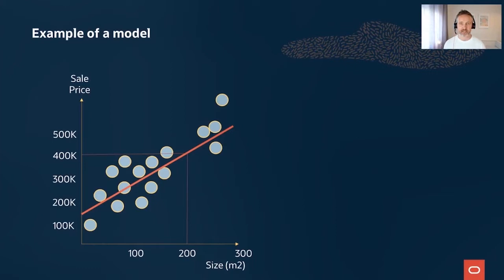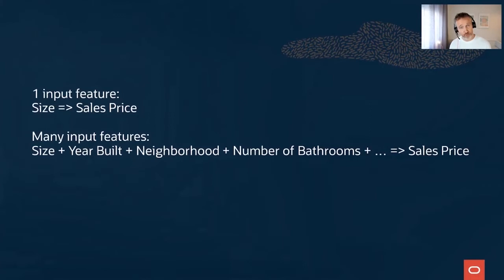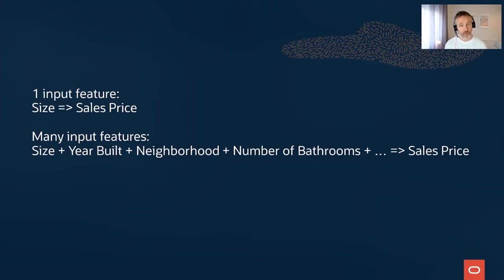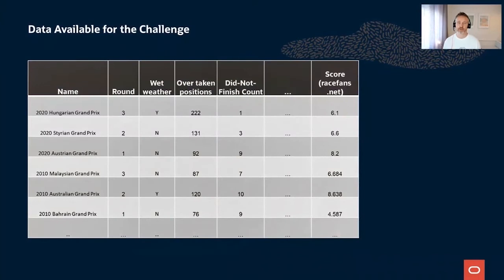This is an oversimplified example — we only had one input feature, the house size. In practice, you train models looking at multiple variables like the number of floors, whether the house has a garage, and the neighborhood. The resulting function becomes a lot more complex — too complex for a human to find manually. Generally speaking, the more relevant data you give to the algorithm, the more accurate the prediction will be.